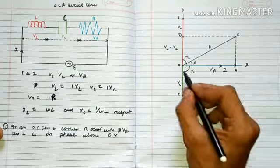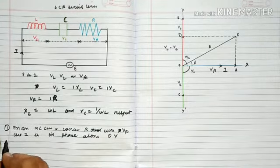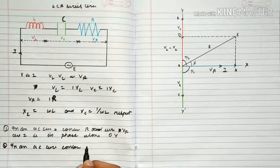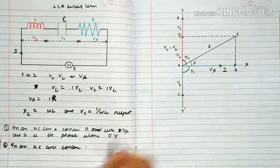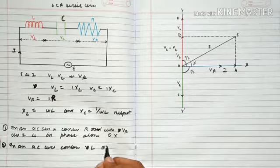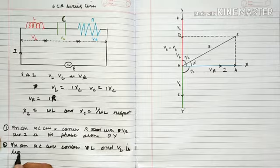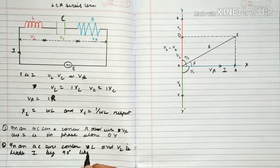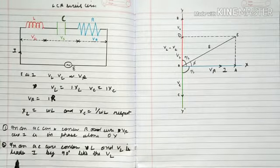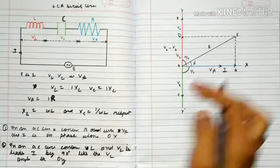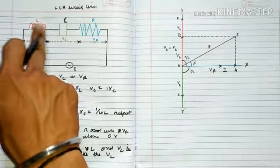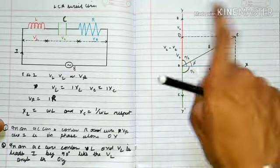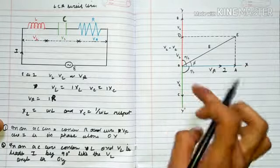In an AC circuit containing inductance only, VL leads I by 90 degrees. VL is along the direction of OY, shown in red color. This is the inductor of inductance that leads the current by 90 degrees, showing upward direction OY.